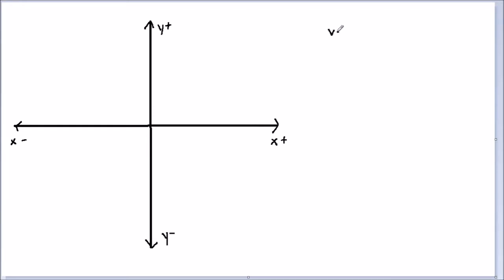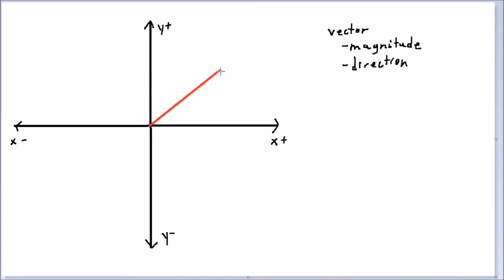A vector quantity is a special type of quantity that we use a lot in physics. It's going to be any quantity that has both a magnitude and a direction. These are going to be different from scalar quantities, which only have a magnitude but no direction. We can visualize a vector on the coordinate plane as an arrow starting from the origin and going in some direction with some length. If we draw an arrow to some random point on the coordinate plane, we can call this a vector — we'll call this vector u.